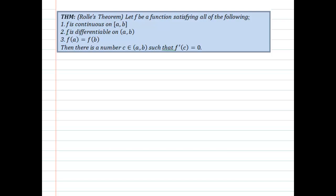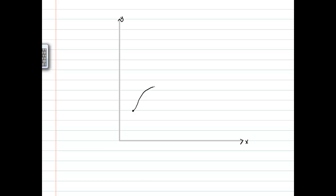This is a proof for Rolle's Theorem. Rolle's Theorem is pretty easy to understand conceptually. It basically tells us that if we have a function that's continuous on an interval, and differentiable on that interval, and we know that on the interval from some a value to some b value, f(a) equals f(b) — in other words, these two function values, these heights, are exactly the same — then there must be some point c in between a and b such that f'(c) equals zero.